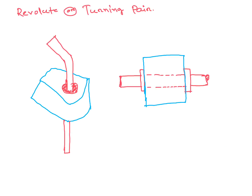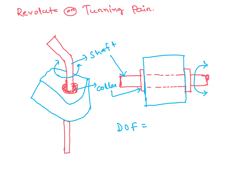A revolute or turning pair consists of a shaft with a collar. It can only rotate — it cannot slide axially. Only rotational motion is possible. It is a lower pair with one degree of freedom. It is often called a pin joint. Example: a circular shaft revolving inside a bearing.